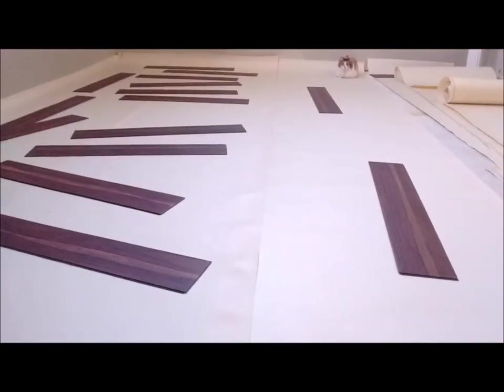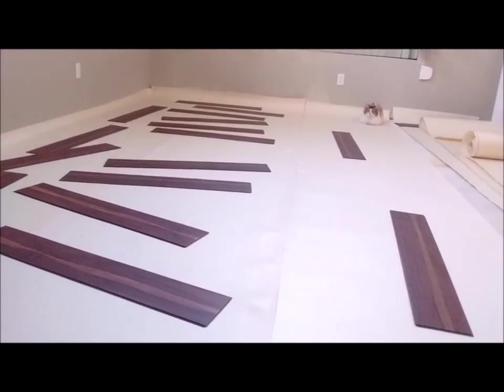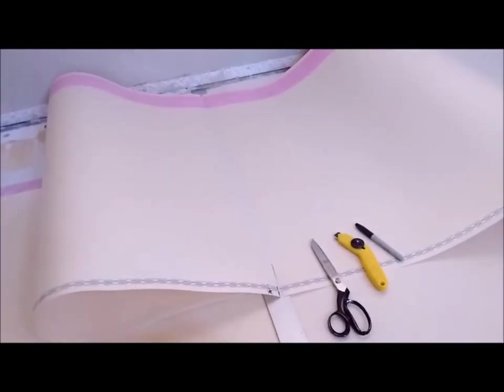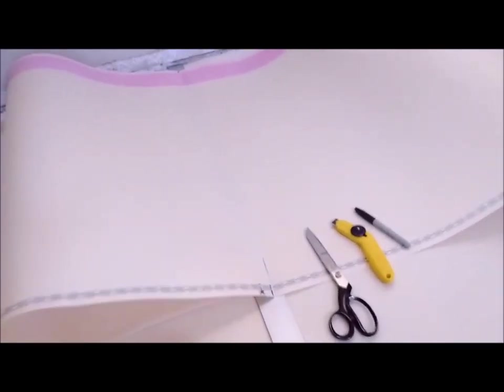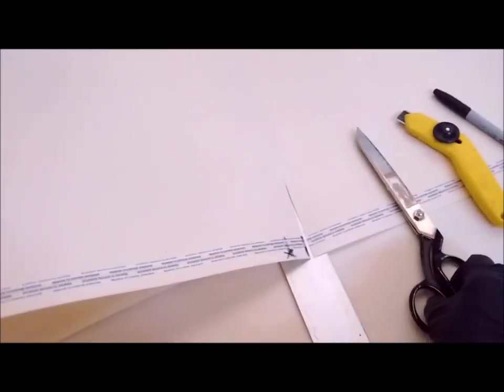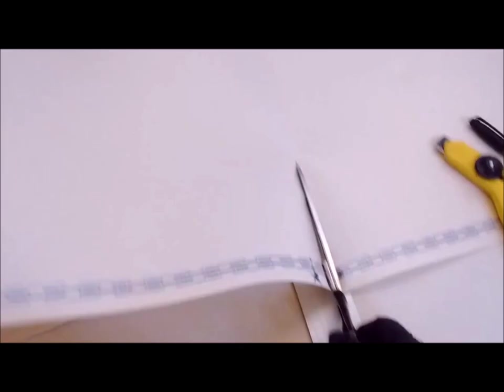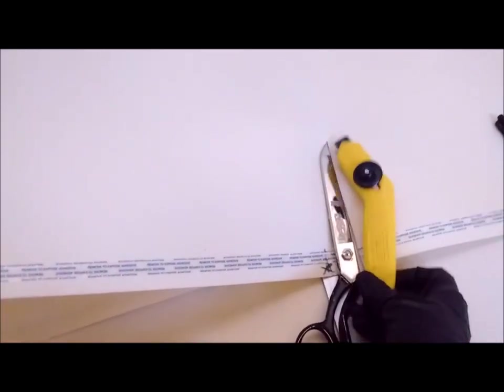You want the rolls to be butted up right next to each other. So go down the line and make sure that's the case. The underlayment is really easy to cut. I've just been using scissors to cut.